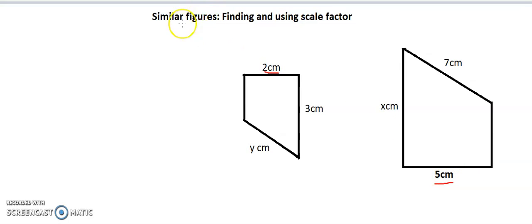So to work out our scale factor, the first thing we need to think about is what is our image's length and then what is our original, because we need to divide the image length by the original because it's a multiplicative relationship.